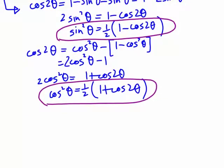Rearranging again, we get cos²θ = ½(1 + cos 2θ). Whenever we want to integrate cos²θ dθ, we just use that substitution.